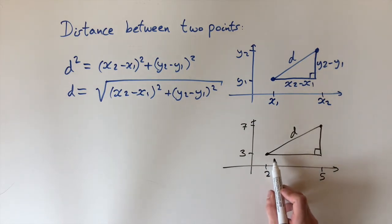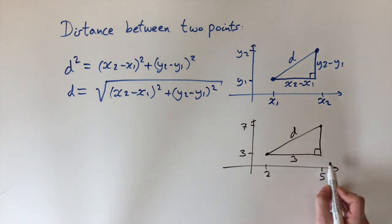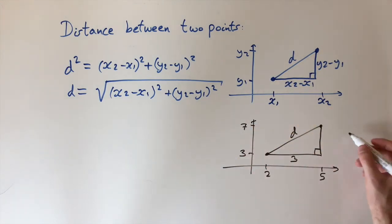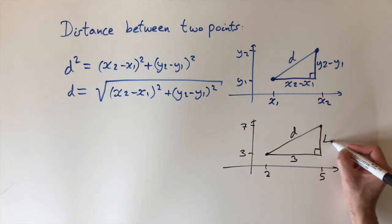And then we need to work out the length of this side, which is the difference of these two components. So 5 minus 2, this has length 3. And for the vertical line, it's the same. We just take the difference between the y components. So 7 minus 3, and this is 4.